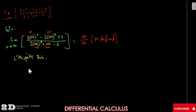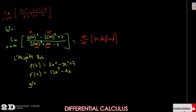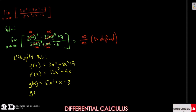For L'Hôpital's Rule, we first identify f(x) = 3x to the fourth minus 2x squared plus 7, so f'(x) = 12x cubed minus 4x. Then g(x) = 5x cubed plus x minus 3, so g'(x) = 15x squared plus 1.